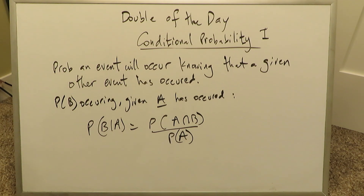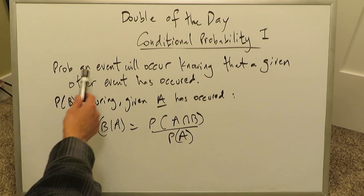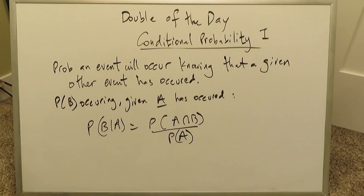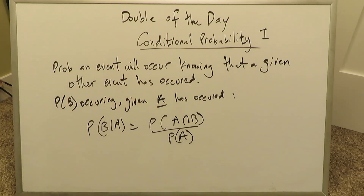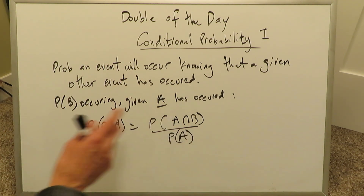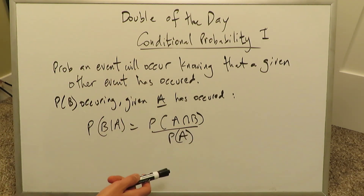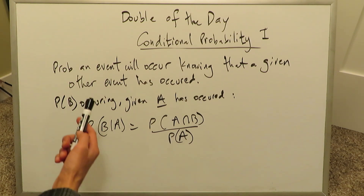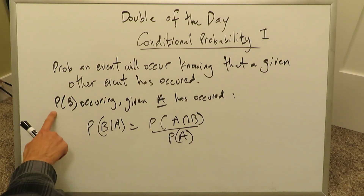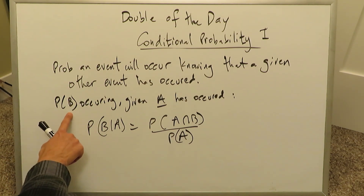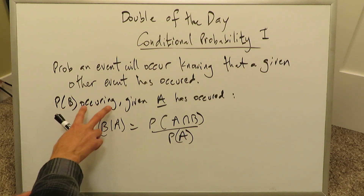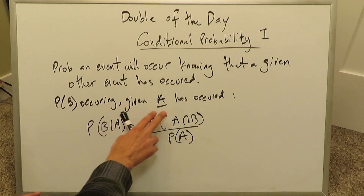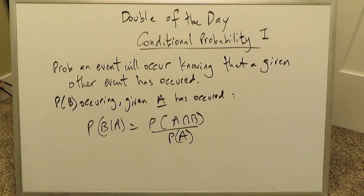What is conditional probability? It is the probability that an event will occur knowing that a given other event has occurred, or knowing some information about some other event. Some other event is tied to the event that you're looking at. Let B be the event you are considering, occurring given that event A has occurred.